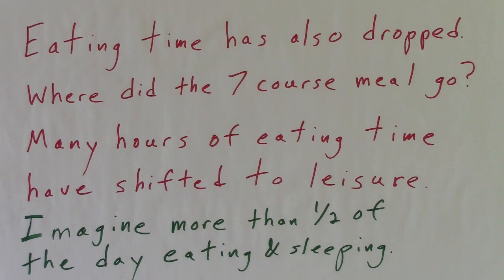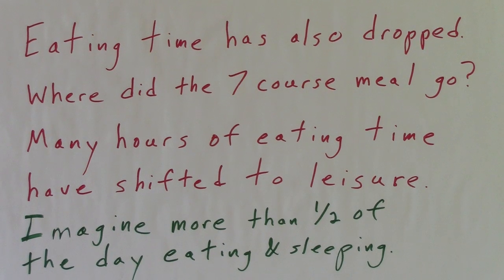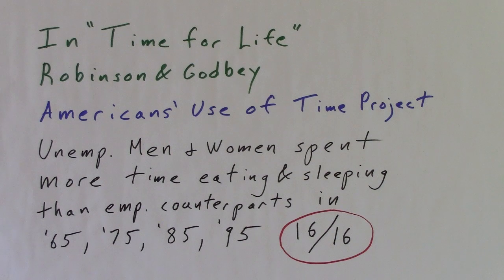In Time for Life, Robinson and Godbay summarized the Americans' Use of Time project. Unemployed men and women spent more time eating and sleeping than their employed counterparts in 1965, 75, 85 and 95. That's 16 for 16.